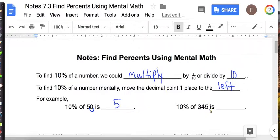10% of 345, once again, start where the decimal is, so at the end of the number, move it one to the left, and it would be 34 and 5 tenths. So all you have to do to find 10% of a number is move the decimal point one place to the left.